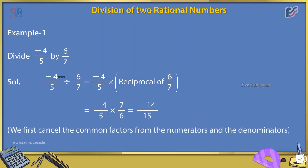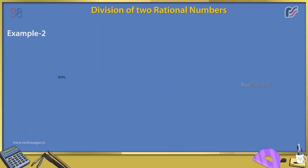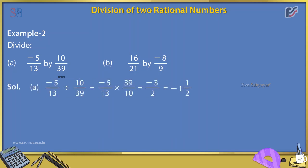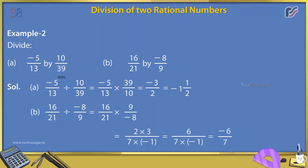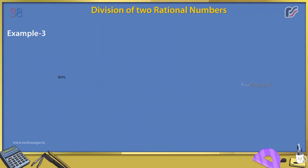Example 2: Divide A. -5/13 by 10/39 and B. 16/21 by -8/9. Solution A: -5/13 ÷ 10/39 = -5/13 × 39/10 = -3/2 = -1 and 1/2. Solution B: 16/21 ÷ (-8/9) = 16/21 × 9/(-8) = (2 × 3)/(7 × (-1)) = 6/(7 × (-1)) = -6/7.